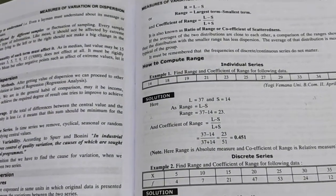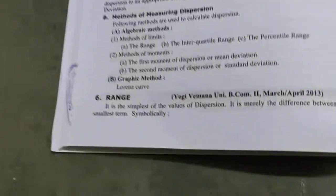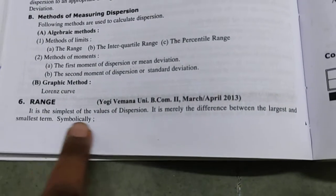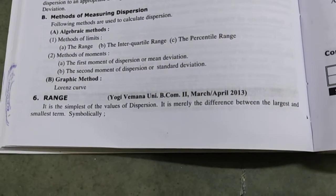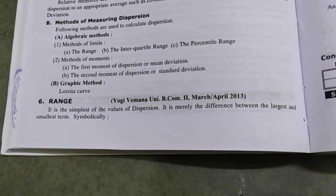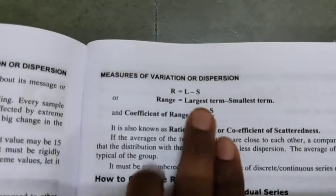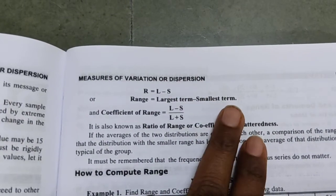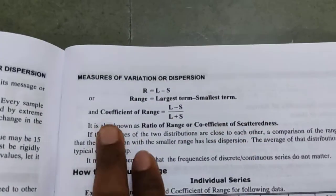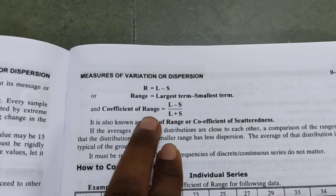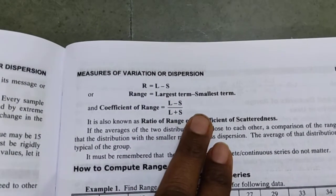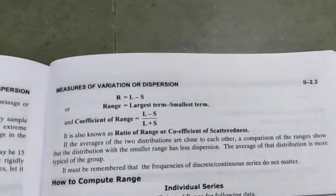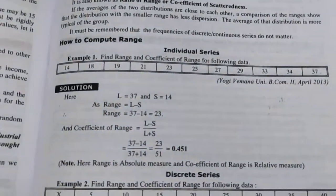Range is the simplest measure of dispersion — it is merely the difference between the largest and smallest values. The formula for range is: Range = L − S, where L is the largest value and S is the smallest value. The coefficient of range formula is: Coefficient of Range = (L − S) / (L + S).